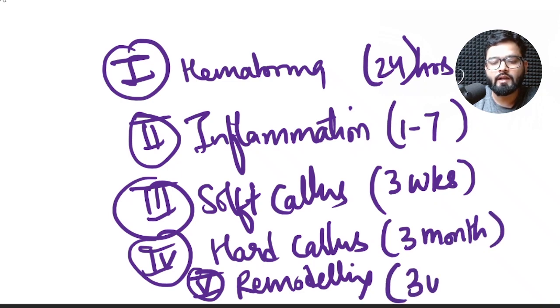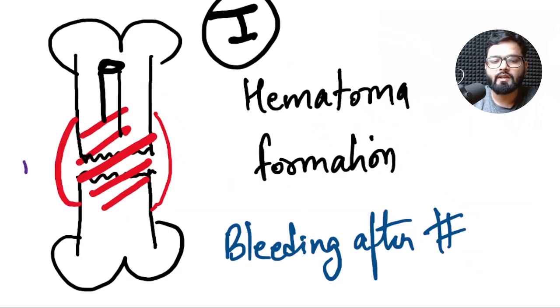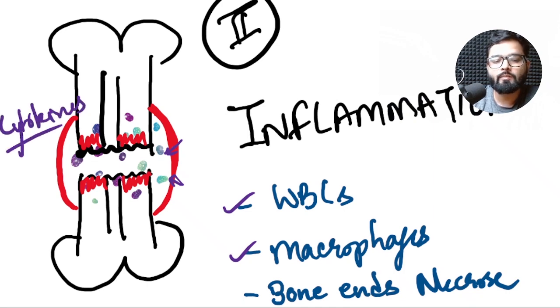So in stage 1 you can see that there is hematoma formation. There is gap at the fracture site and it occurs due to bleeding of the fractures ends. In stage 2 these inflammatory cells which are WBCs and macrophages come at the fracture site and they release cytokines which stimulate the repair process. You will see that some bone necrosis of the ends of the bone occurs at this stage.